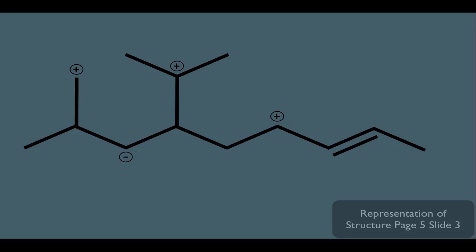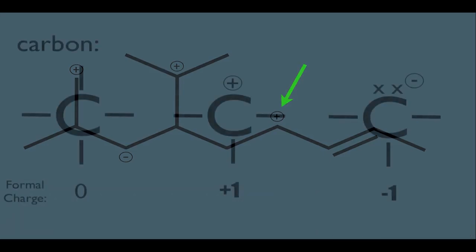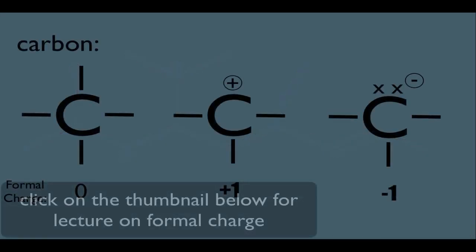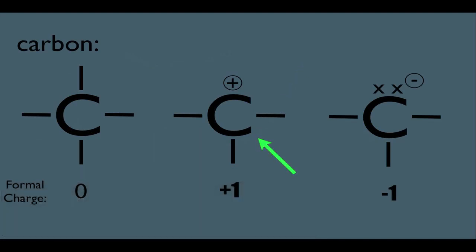Let's say we have this molecule right here and we want to get a better idea of this carbon right here — like how many hydrogens are connected to it. We'd have to think about the formal charge first. Remember, we learned in a previous online lecture that whenever carbon has a positive formal charge, it always has three bonds total.